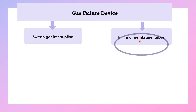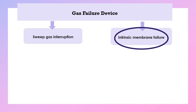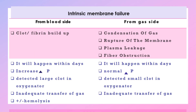Intrinsic membrane failure from the blood side presents with clots or fibrin buildup, occurring within days with increased delta P (B2 minus B3), larger clots in the oxygenator, inadequate gas transfer, and with or without hemolysis. From the gas side, failure presents as condensation, membrane rupture, plasma leakage, or fiber obstruction — also within days, with normal delta P, reduced small clots, and inadequate gas transfer. Both require changing the circuit if the oxygenator and pump are one unit, or changing only the oxygenator if it is a separate unit.